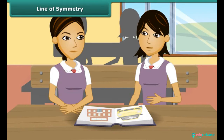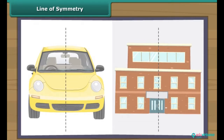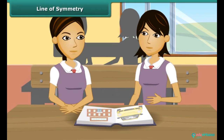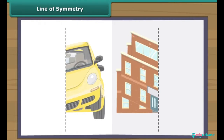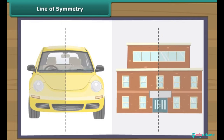Look at these figures. The line you can see is the line of symmetry of these figures. Line of symmetry — what is that? When we fold the figure about this line of symmetry, we will see that the two parts of the figure are coinciding.